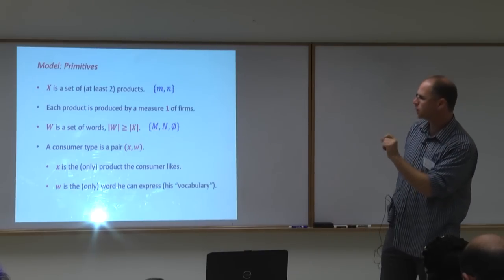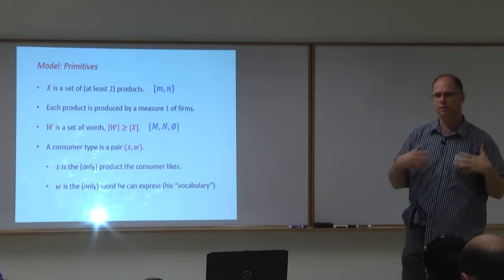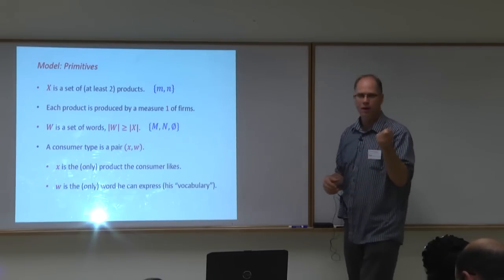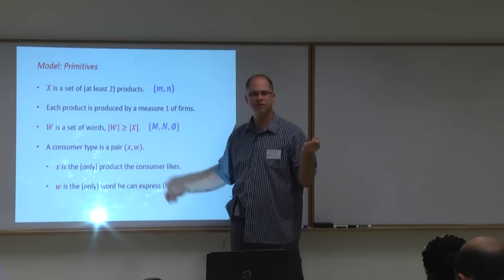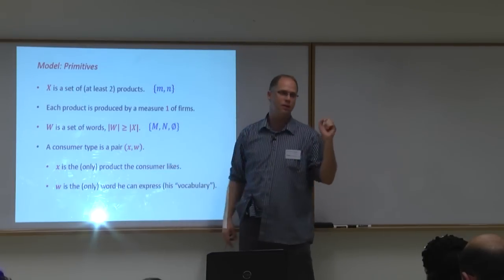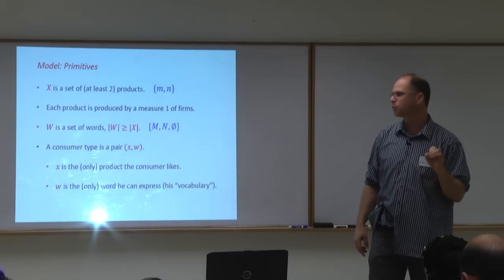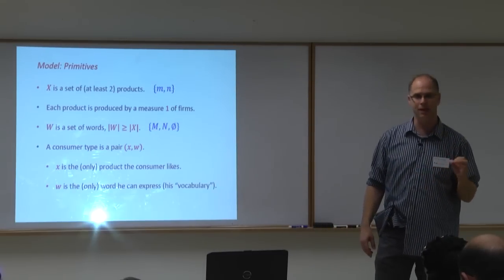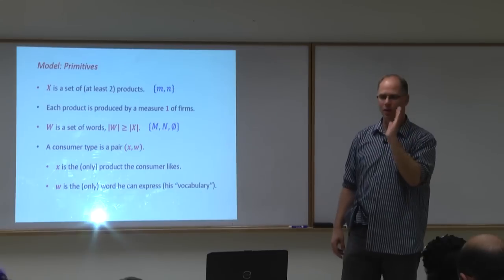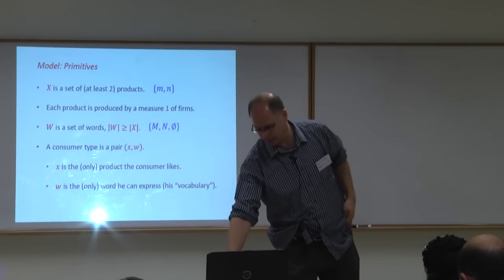The first modeling innovation: usually in economics, an agent's type is defined by preferences. Here, an agent is defined by two things — preferences and vocabulary. A consumer type is the product he's interested in (X) and the only word he can express (W). His vocabulary consists of just one word — that's the only query he's able to submit.